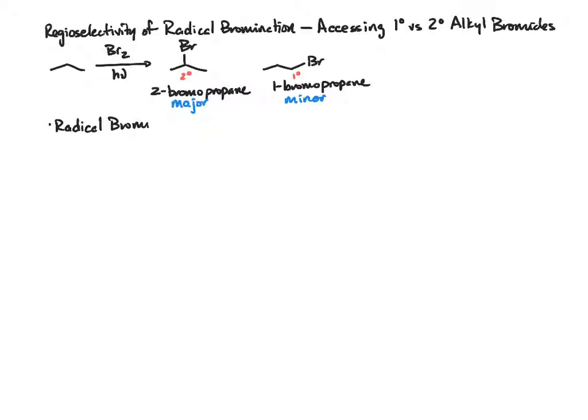This is going to be radical bromination in the presence of peroxides. We're still proceeding through a radical mechanism, but this time the conditions are different, in that we're going to use hydrogen bromide and a peroxide initiator.